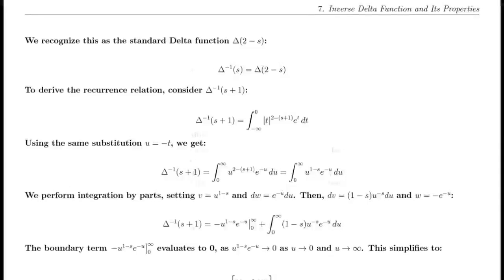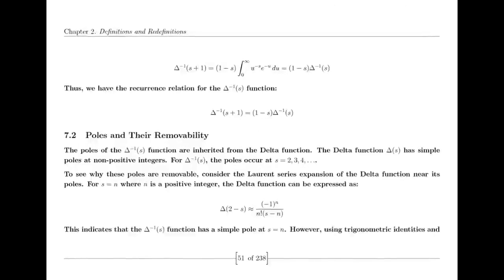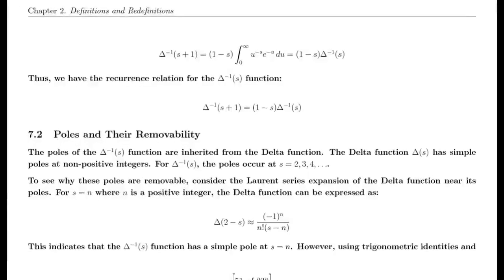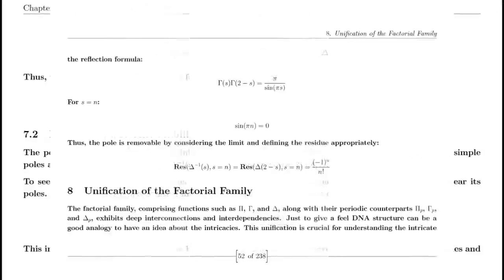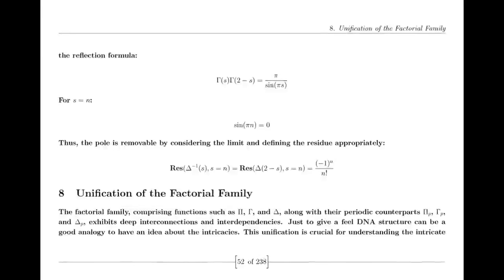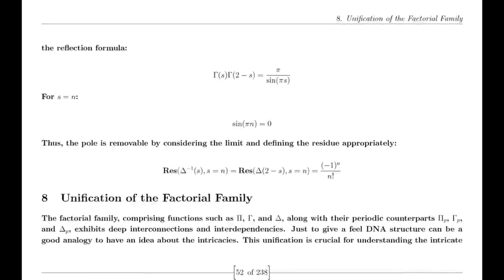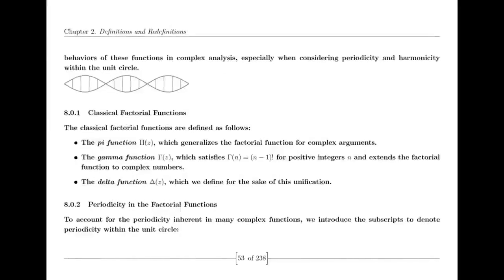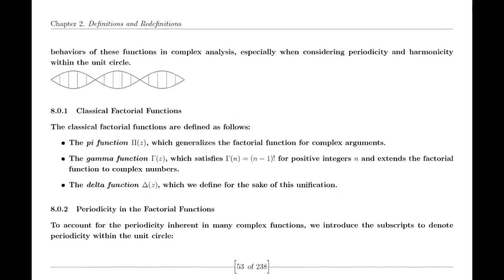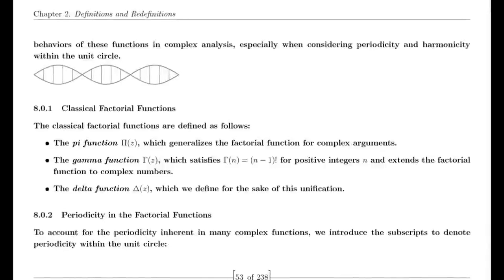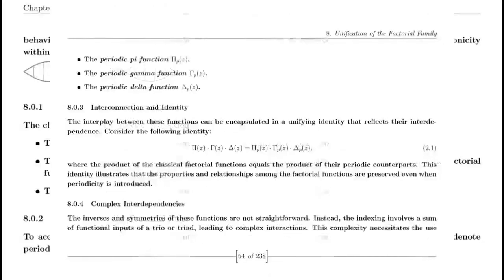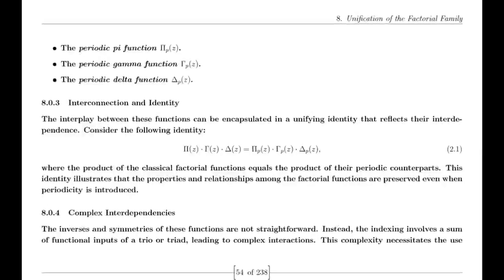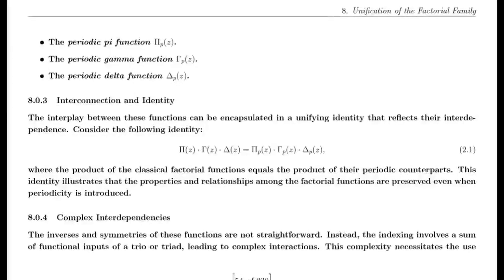Some may say two decimal places are not enough, but consider: in scientific measurements, two decimal places can be enough to disrupt 5-sigma accuracy, often used to assert a discovery in physics. The fact that this result zeros out at two leading decimal places points to deeper underlying symmetries — much like those proposed by the Riemann hypothesis, which deals with the precise placement of zeros of the zeta function along the critical line.